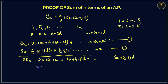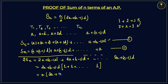We take 2a plus n minus 1 times d as common. Inside the bracket we get 1 plus 1 and so on for n terms, which equals n. So 2 times Sn equals n multiplied by 2a plus n minus 1 times d.